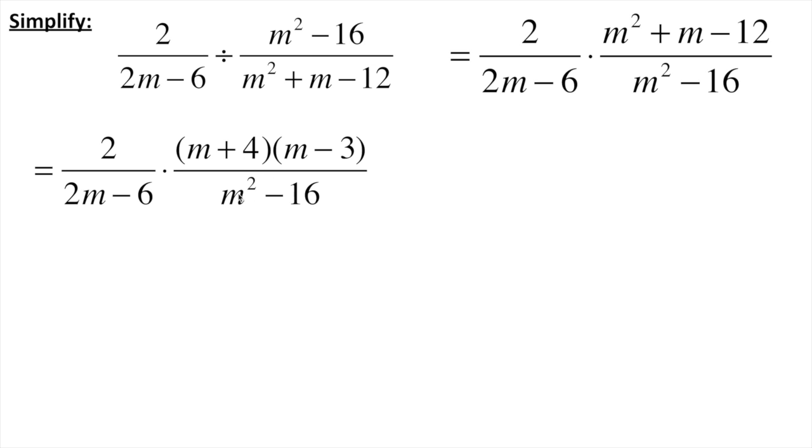Now we also need to factor what's on bottom here. Well on bottom I've got two numbers that multiply together to give me negative 16 but add together to give me 0. My b value here is 0. That's going to be a positive 4 and a negative 4. So I've got m minus 4 times m plus 4.